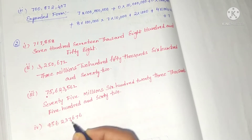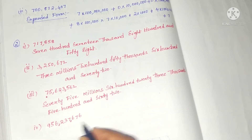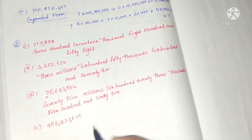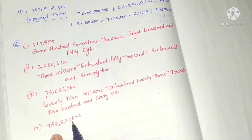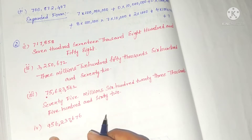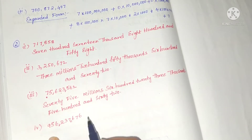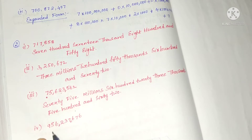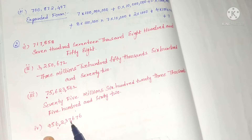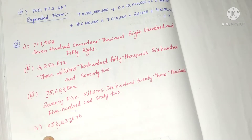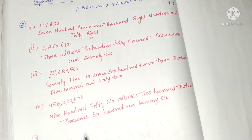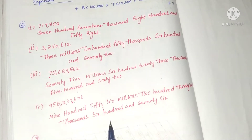We write commas every time after three digits from the right side. So the fourth number in word form is: 956 millions, 237 thousands, 676.